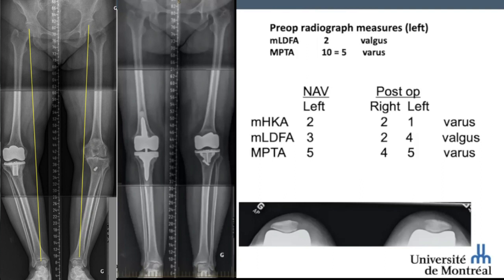As you can see on the post-op radiograph, we were able to achieve most of our goals: 1 degree varus HKA on the left lower limb and 2 degree varus on the right lower limb. There is a slight discrepancy between the data provided intraoperatively by navigation and the plain radiograph, which is quite normal because we know that two-dimensional plain radiographs may not be as accurate as we would want.